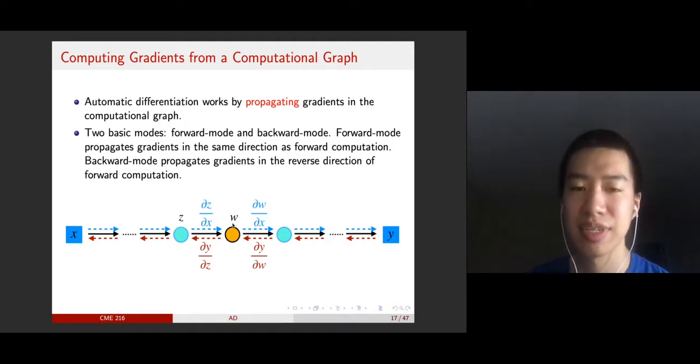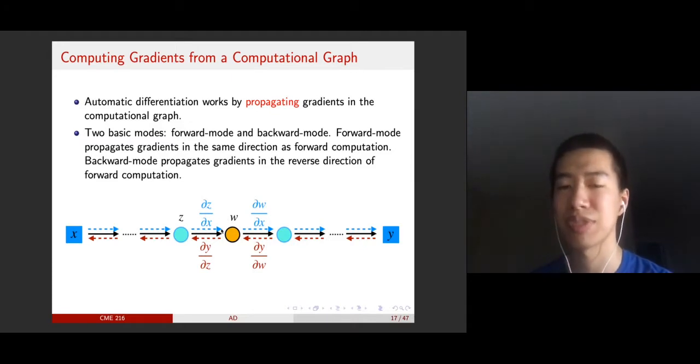You want to propagate this edge to this edge. That means you propagate this gradient to ∂W, which is the output of this node, with respect to the primitive variable X. How do you do that? This is the chain rule. ∂W/∂X, how do you express that by ∂Z/∂X? This is just by the chain rule using the composition rule. You can do this calculation.